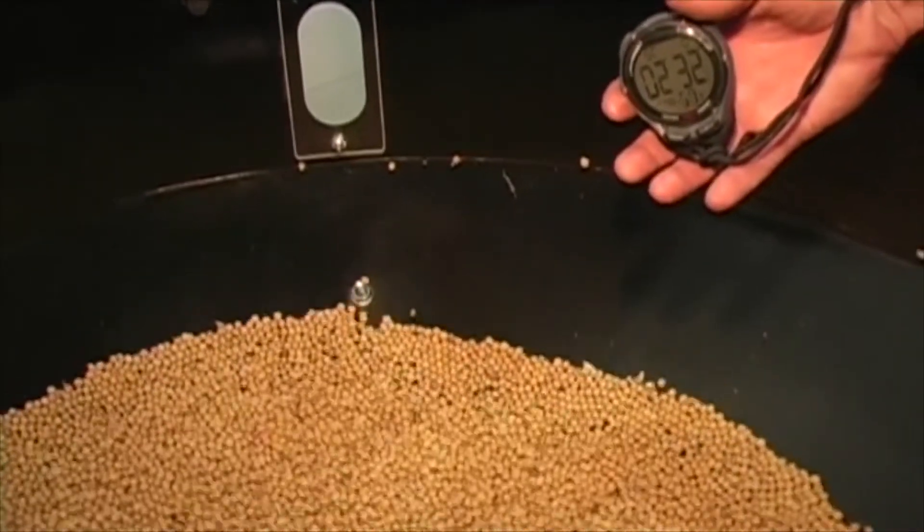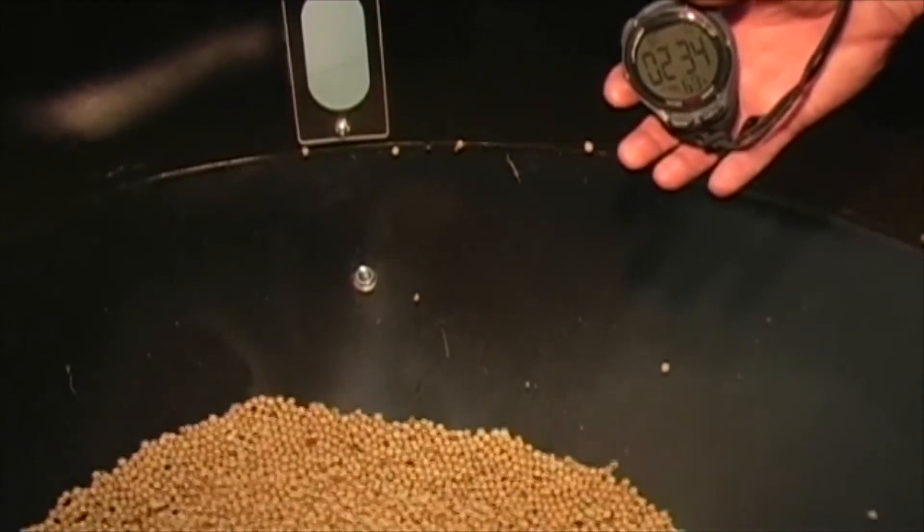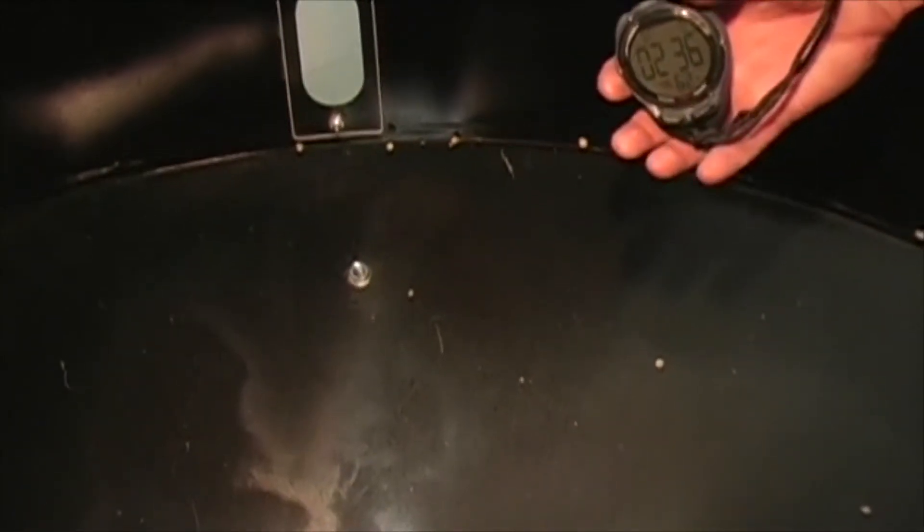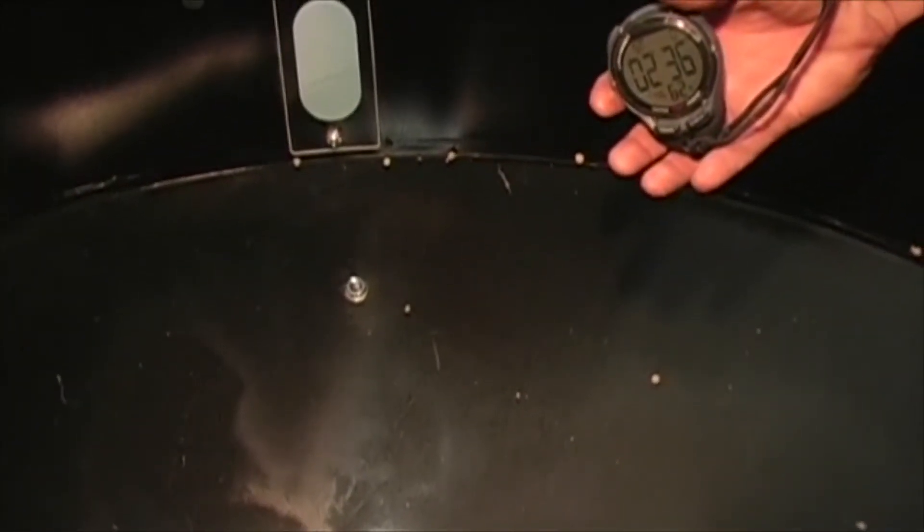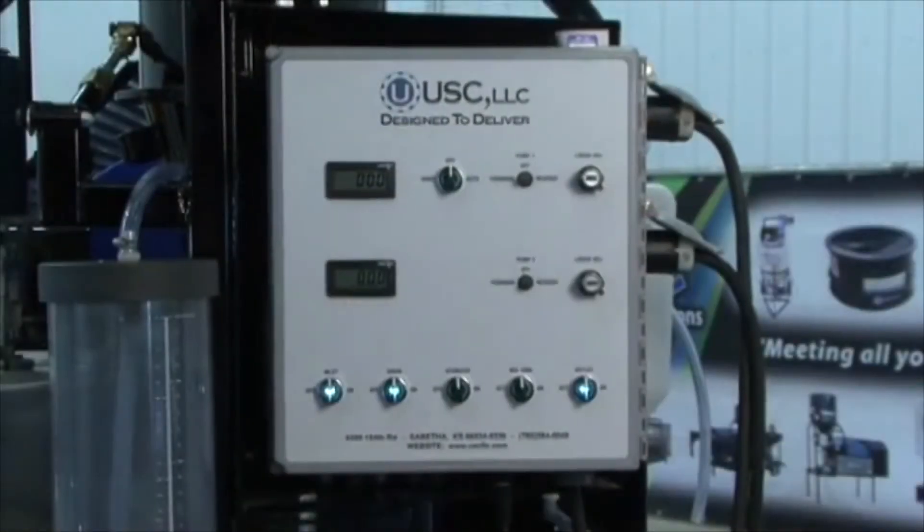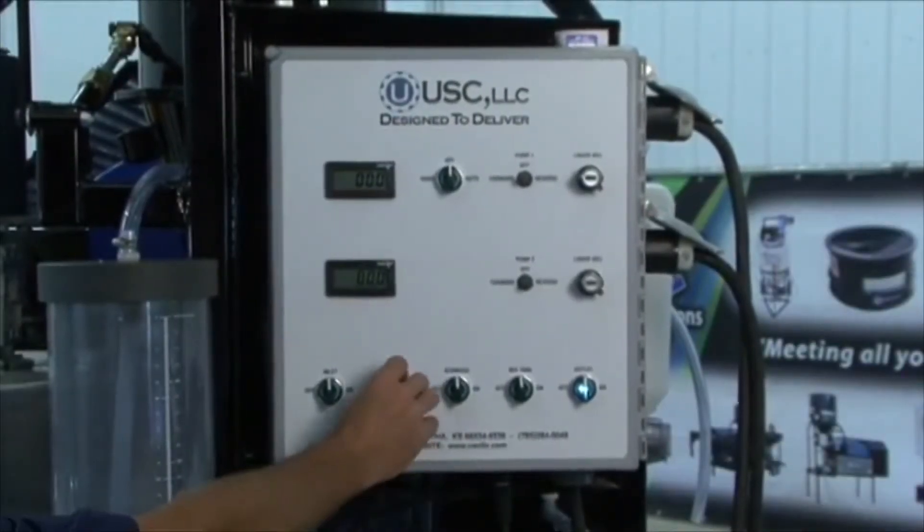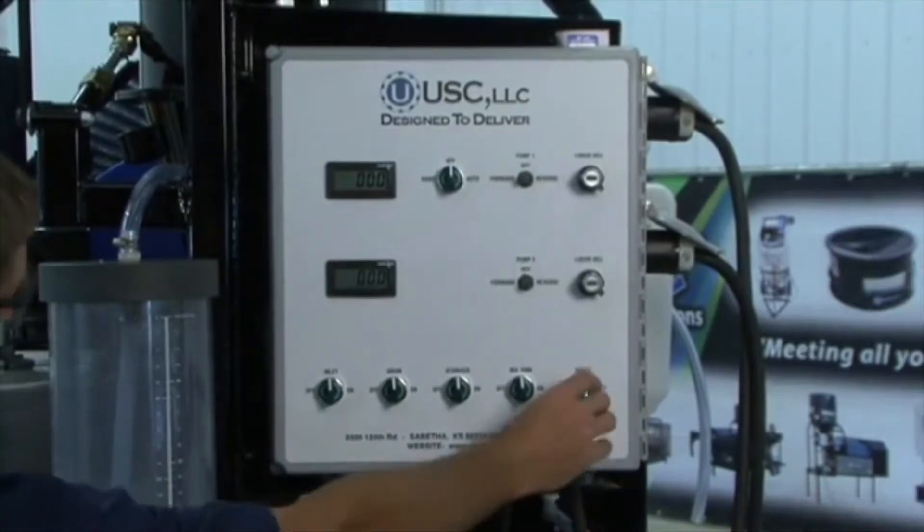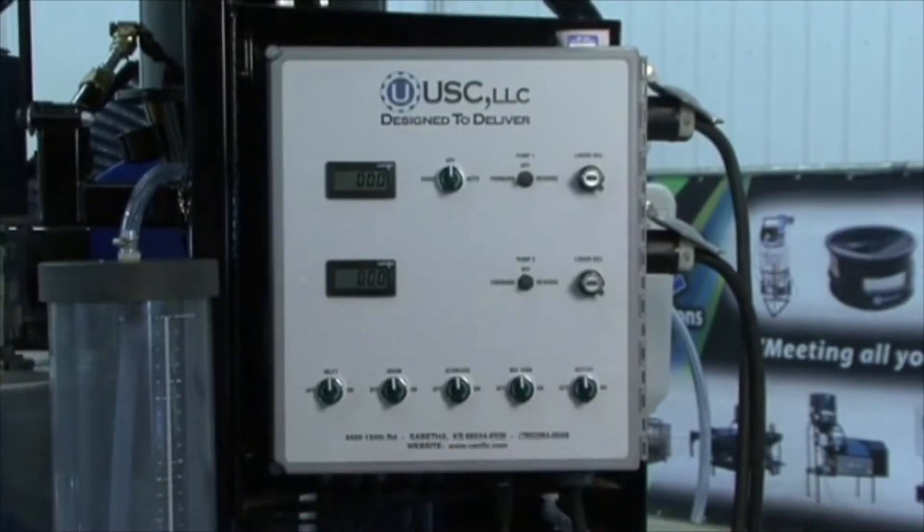After all seed has passed through the treater, stop timing. Wait until all seed has passed through the drum and outlet conveyors. Then turn the inlet conveyor, drum, and outlet conveyor motors off.